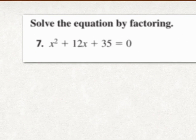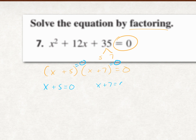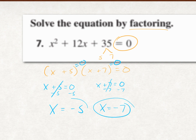For number 7, it's already equal to zero, so we can go straight to factoring. What two factors of 35 add to 12? That's 5 and 7. This factors into x plus 5 times x plus 7. Since we didn't multiply the leading coefficient, we don't divide. Set each parenthesis equal to zero: x plus 5 equals zero and x plus 7 equals zero. Subtracting 5 gives x equals negative 5; subtracting 7 gives x equals negative 7. Those are our two answers.